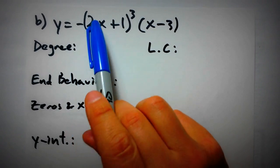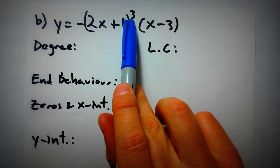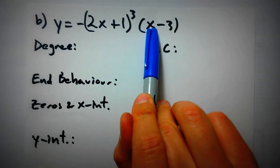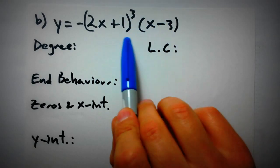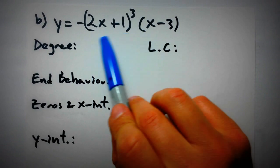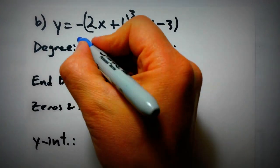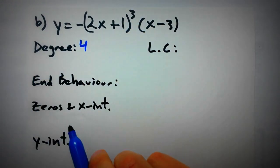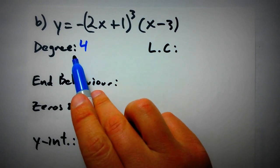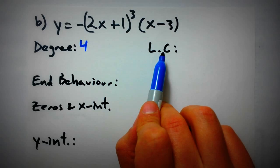Let's figure out the degree of this function. If we were to expand this, the cubic factor already gives us degree 3, but we have another x from the (x minus 3) factor. So if we bring that x into the cubic function, we end up with x to the power of 4. This function has a degree of 4, so it's an even-degree function.